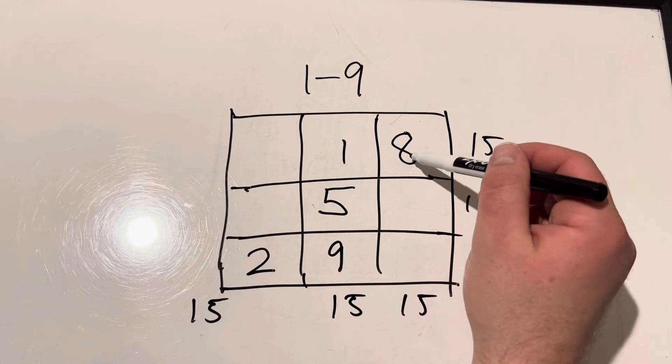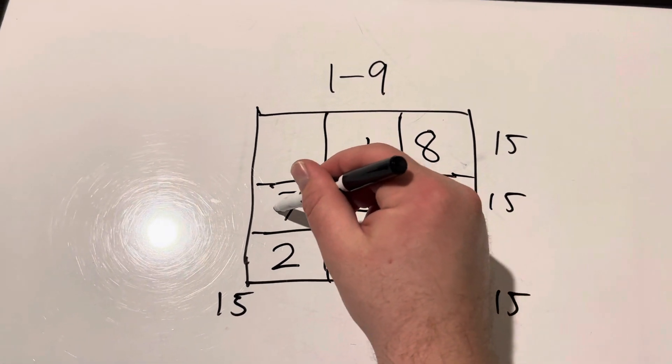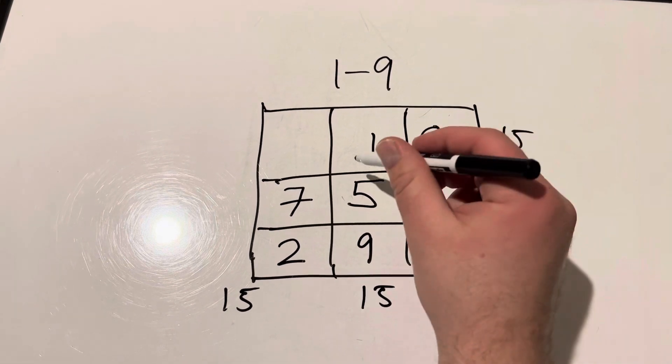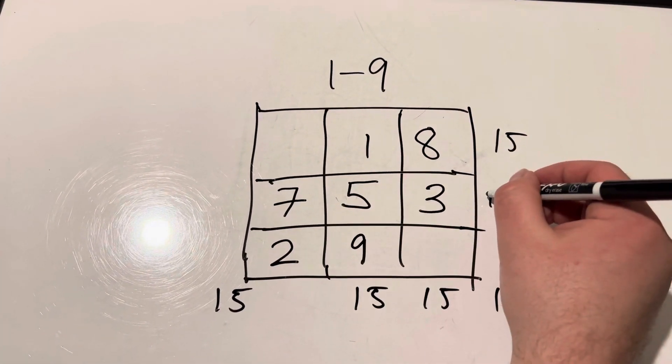So if eight is right here and nine's right here, we know that seven needs to go right here, which means that right here is the three, so that adds up to 15.